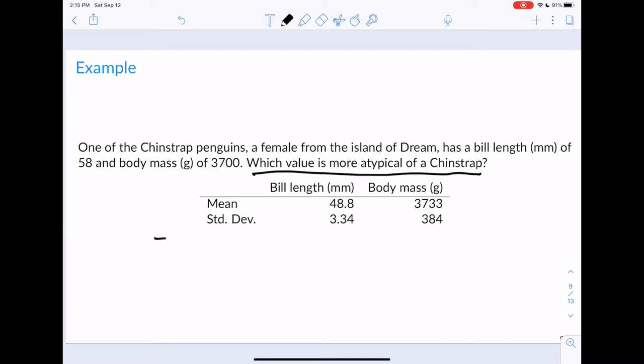So let's calculate it. The z for the bill is the data value, so it's going to be 58 minus the mean, which is 48.8, divided by the standard deviation, which is 3.34. This is going to be 2.75 standard deviations. What that's saying is that this female, her bill length is 2.75 standard deviations above the mean. So she has a very large bill relative to the other penguins.